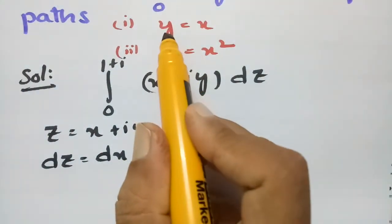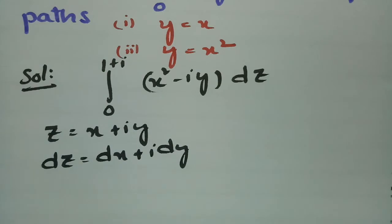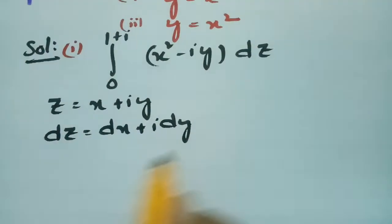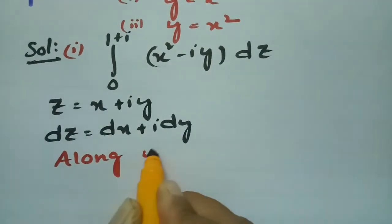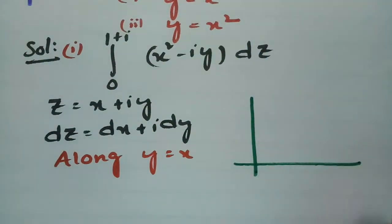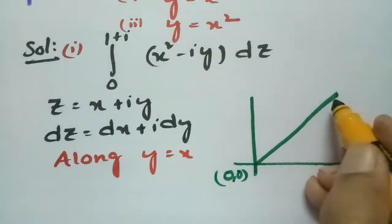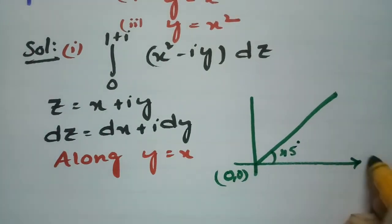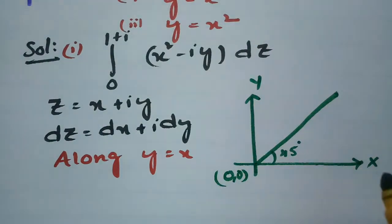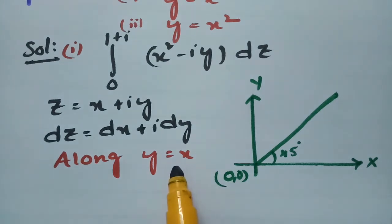First of all, I am going to evaluate the integral along the path y = x. This is Solution 1. Along y = x, this is a straight line passing through the origin with slope 45 degrees or π/4. It is of the form y = mx + c where c = 0 and m = 1, so tan θ = 1 and θ = 45 degrees.